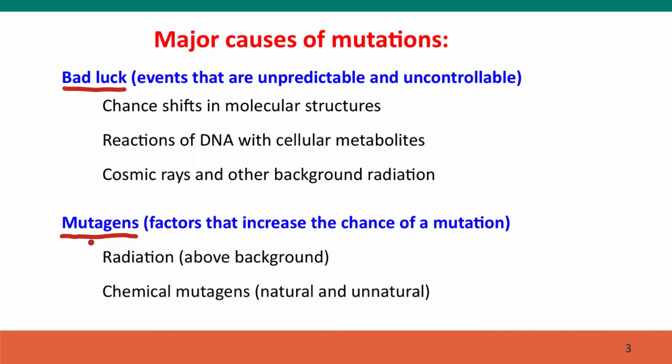In contrast, mutagens are factors that increase the chance of a mutation above the background caused by bad luck. And this includes primarily radiation, above background radiation, and chemical mutagens, chemicals that we're not necessarily constantly exposed to, but they may be natural chemicals or unnatural ones.